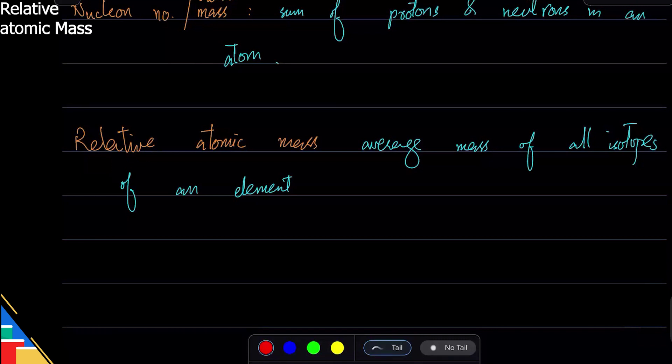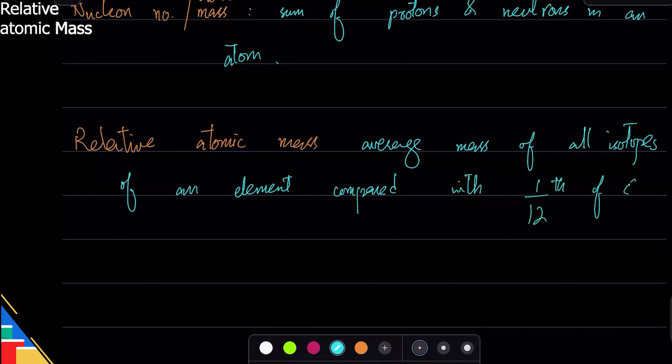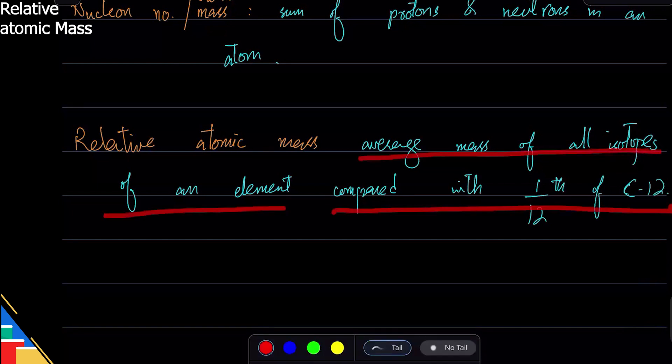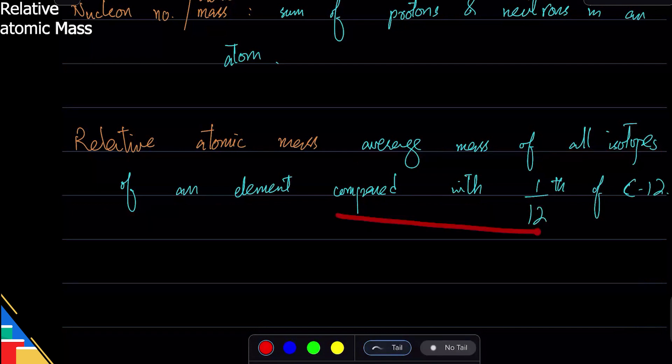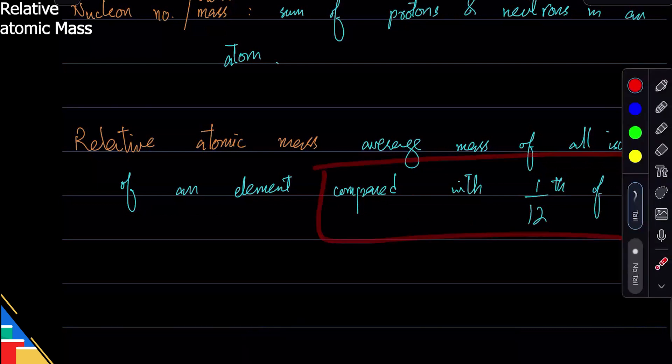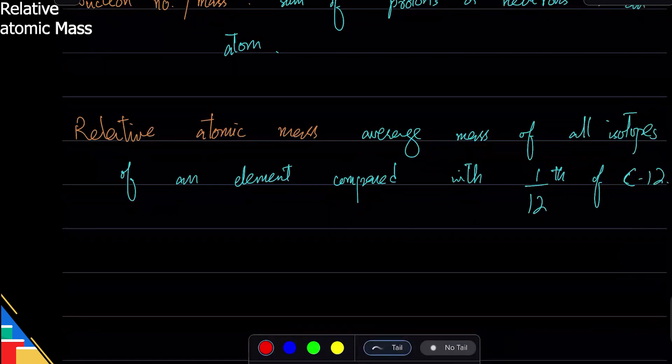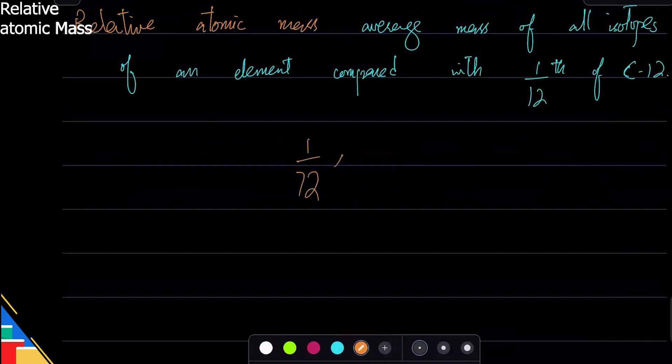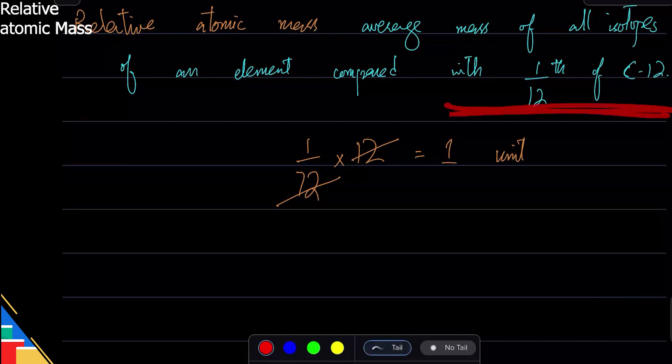Average mass of all isotopes compared with 1/12th of carbon-12. This is important - in your exam you will get one mark for this part and one mark for this part. That the mass is compared with 1/12th of carbon-12. Why? Because our chemistry unit is this. And what is a unit? Unit is always 1, right? You take 1/12th and if you multiply it by 12, what is it? 1, right? This is our unit. So our unit is 1/12th of carbon-12, and we compare everything with that.